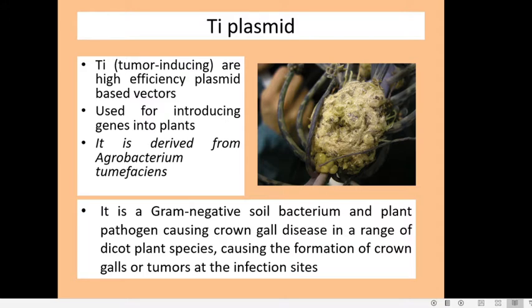Agrobacterium tumefaciens is a gram negative soil bacterium which is pathogenic and it causes crown galls, leading to the formation of crown galls in dicot plant species. These crown galls are like tumors. They can be seen in different parts of the plant but are mostly seen in the crown of dicot plants, and this is induced by Agrobacterium tumefaciens.